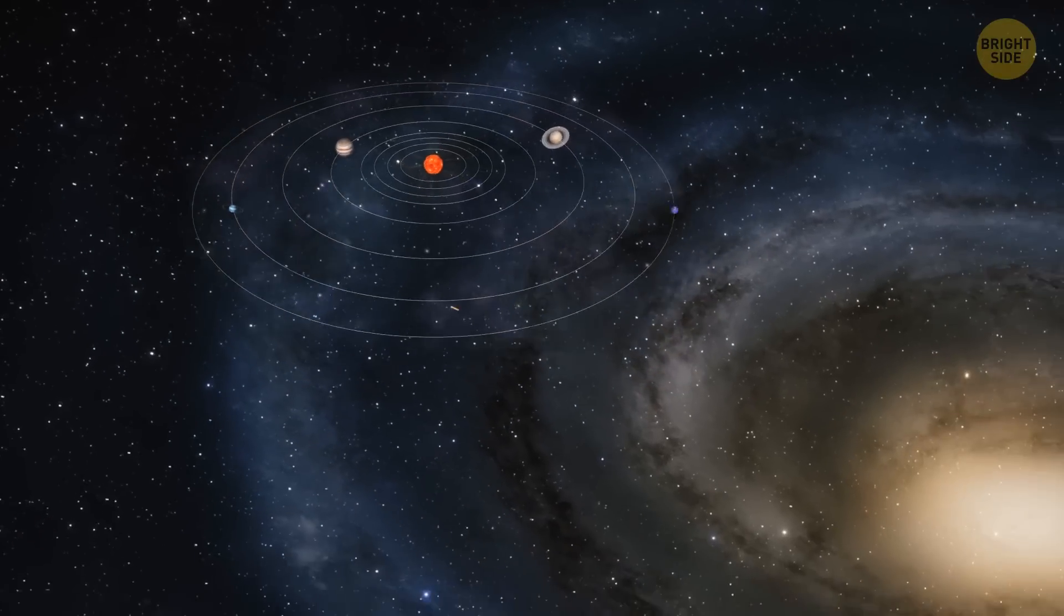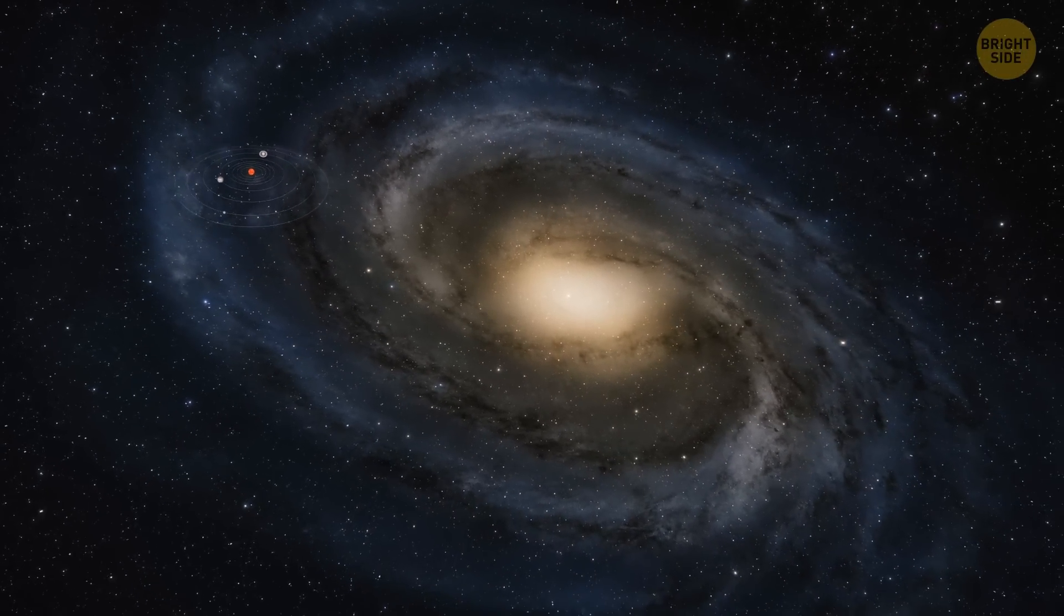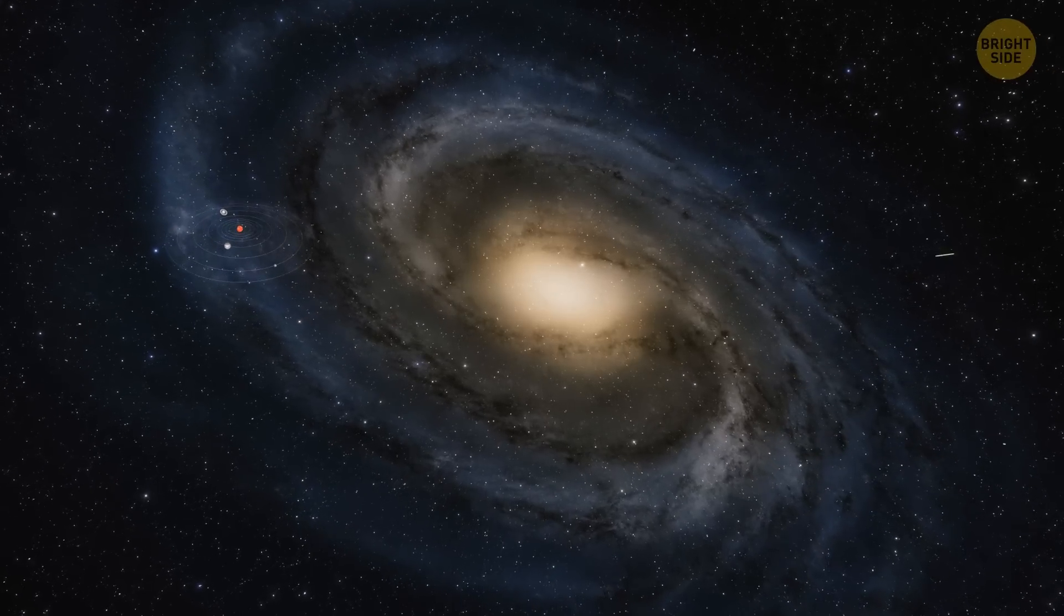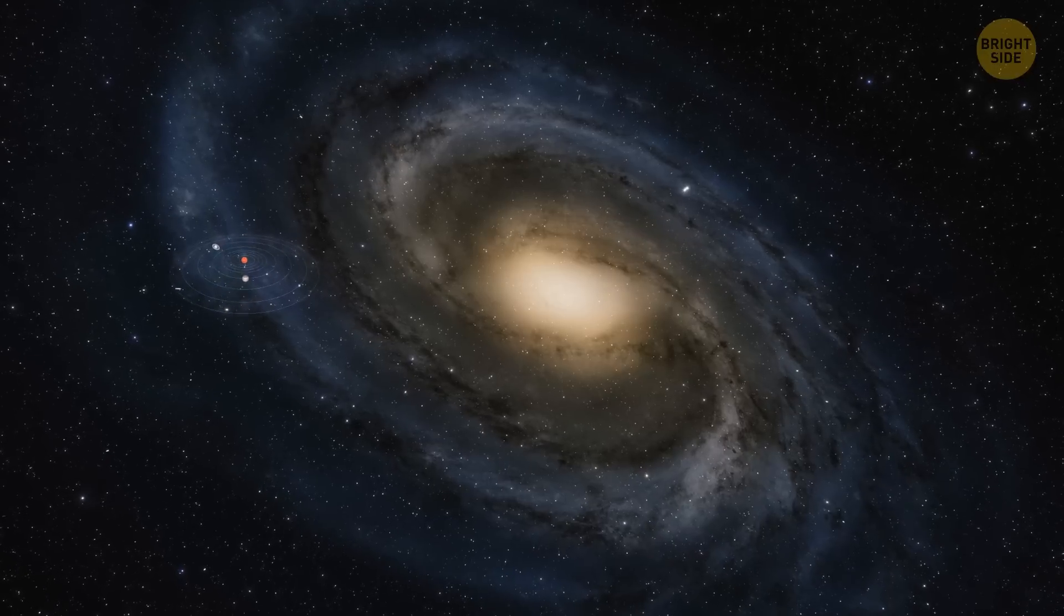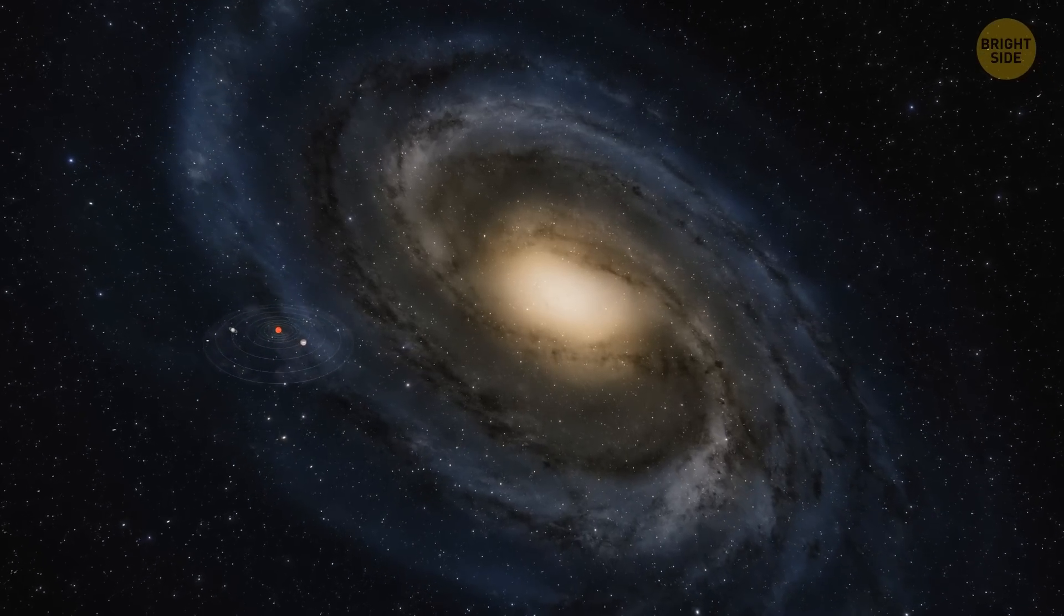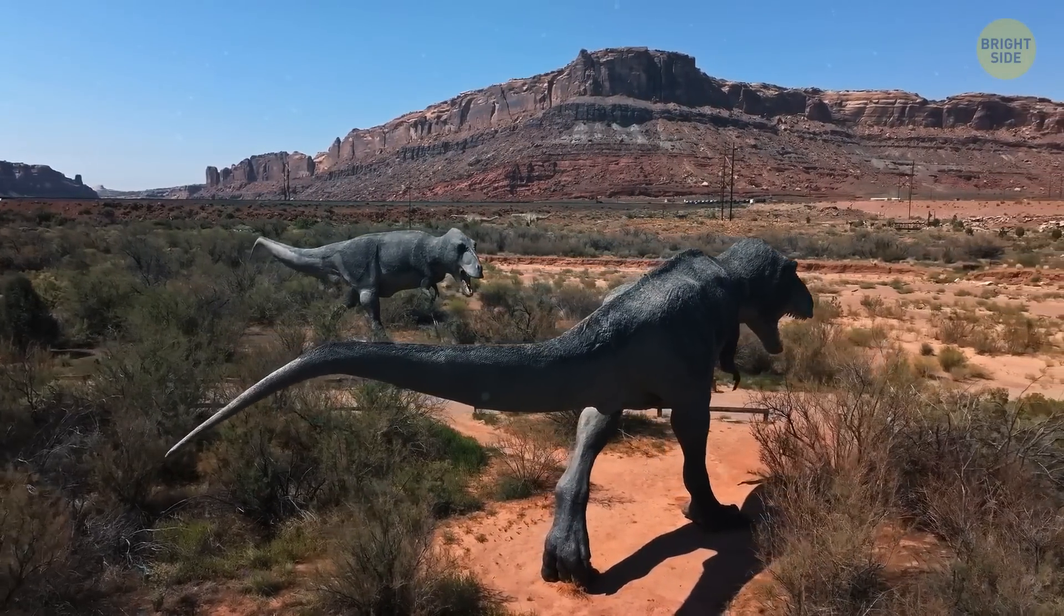The solar system is also moving through the Milky Way as it orbits around the galactic center. It takes about 230 million years for our system to make one complete orbit around the galaxy. Just imagine that. Since the time of the dinosaurs, we've traveled just a quarter of this way.